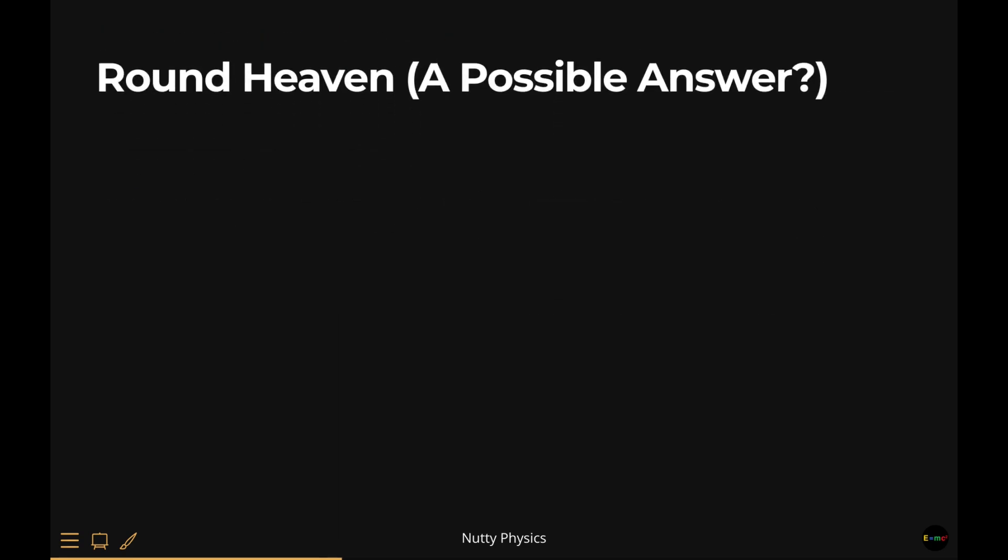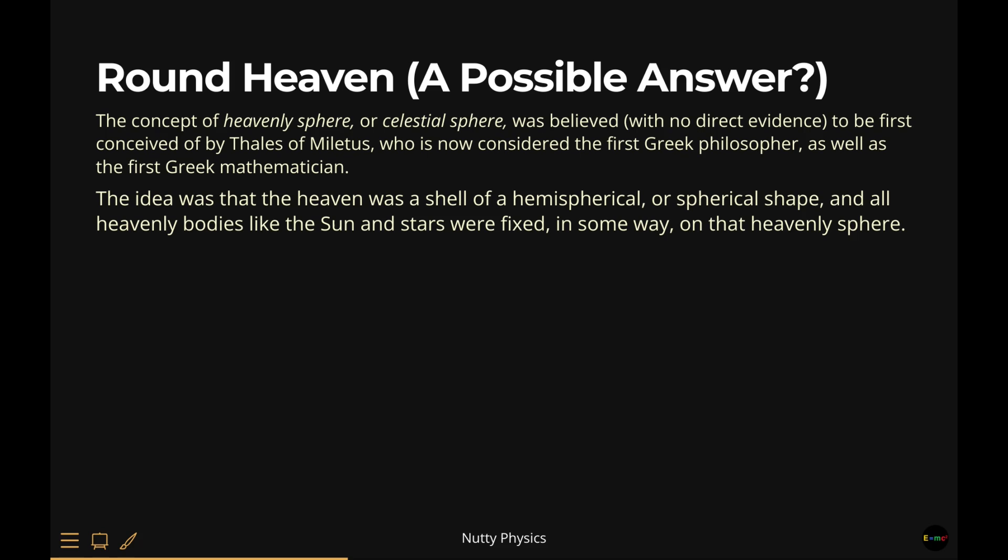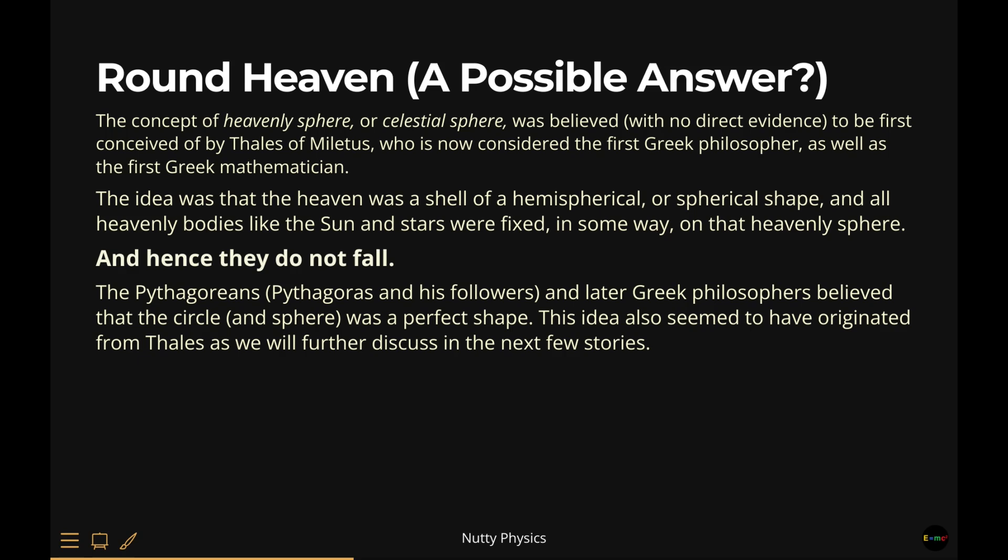Round Heaven. One of the great inventions of Greek philosophers, astronomers was the concept of heavenly spheres, also known as celestial spheres. The idea was that the heaven was a shell of a spherical or hemispherical shape, presumably with a firm and stiff structure. Then all heavenly bodies like the sun and stars were attached on that heavenly sphere. And hence they do not fall. This idea is, more or less, credited to Thales of Miletus. Thales is now considered the first philosopher, the first astronomer, and the first mathematician in Western civilization.